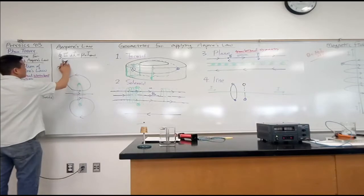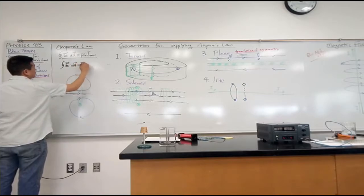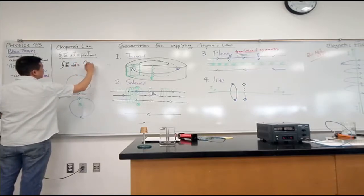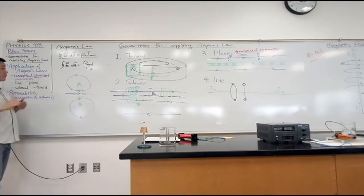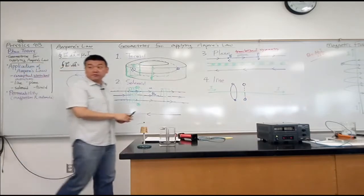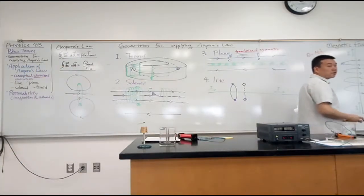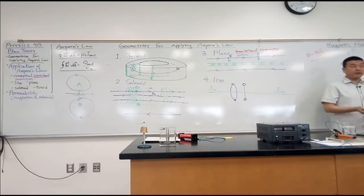The Gauss's law said the surface integral, or the electric flux, was equal to Q enclosed over ε₀. So even though we are not actually ever going to do an integral, we have to pretend that we are going to do an integral. So what did you have to do to set up that integral in applying Gauss's law to find the electric field?